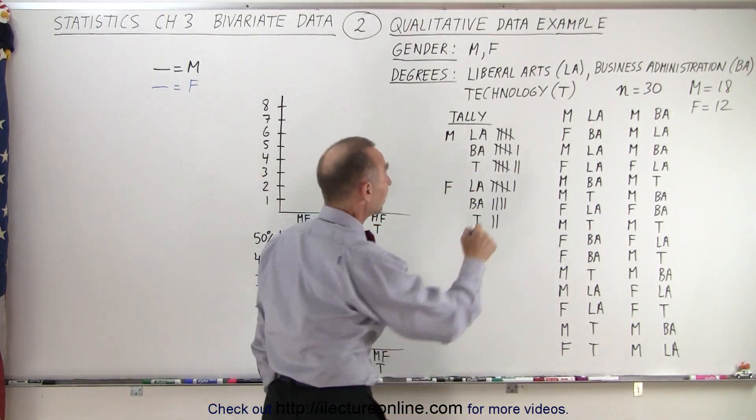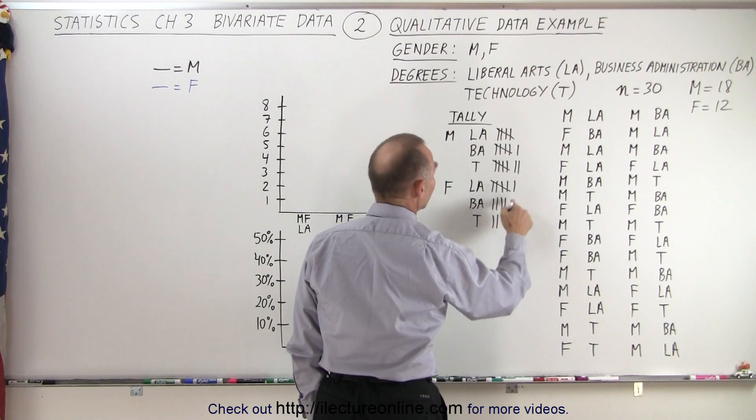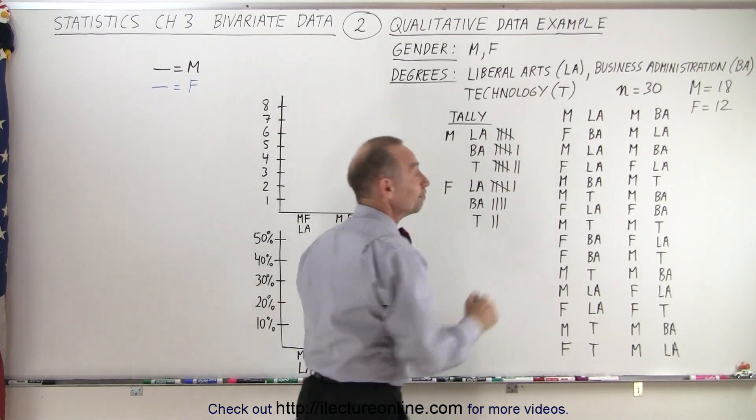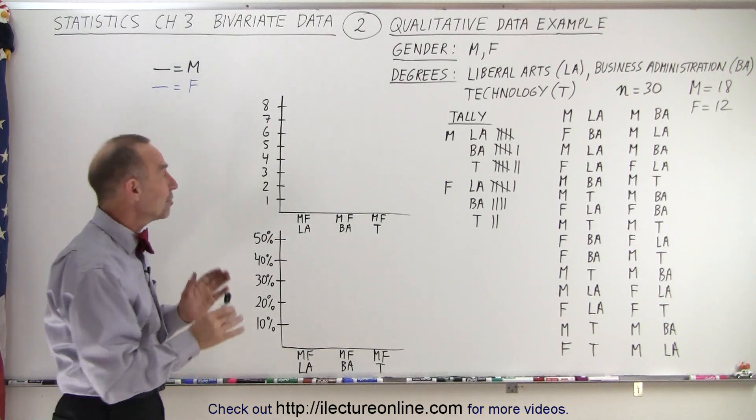Now let's see if we have 30 total tallies: 5, 10, 15, 20, 24, 26, 27, 28, 30. So we probably did that correctly. Now we're going to graph that in two ways.